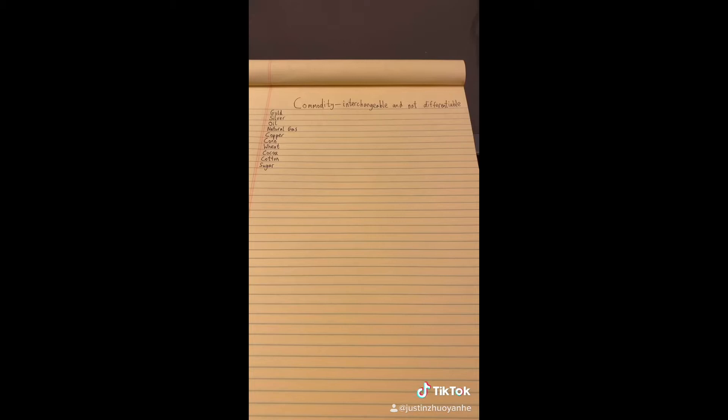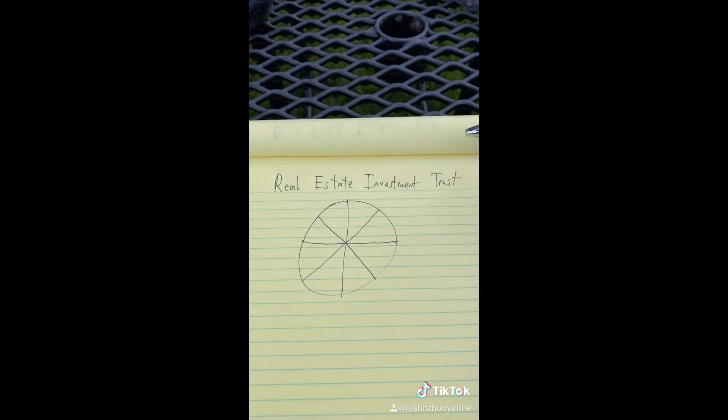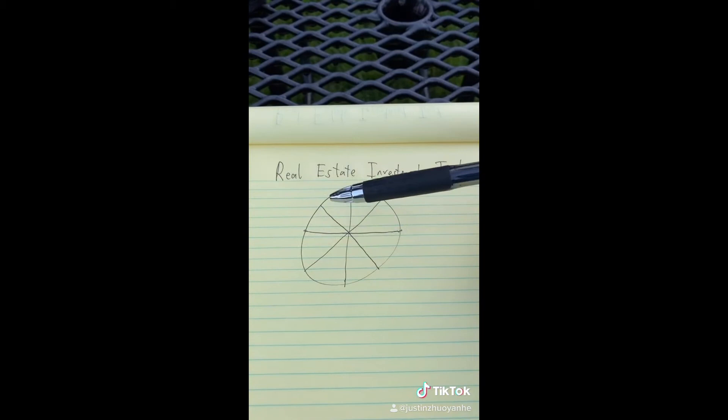What are REITs in 15 seconds? REITs stand for Real Estate Investment Trust, which are real estate companies that own revenue generating real estate. Its ownership is split into a bunch of shares, which are called REITs, and when you're buying these shares, you're buying REITs.